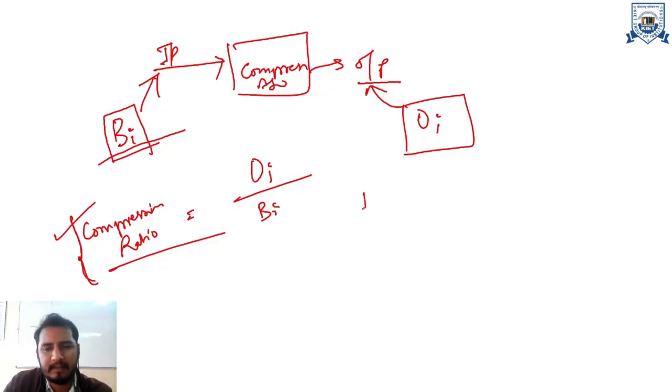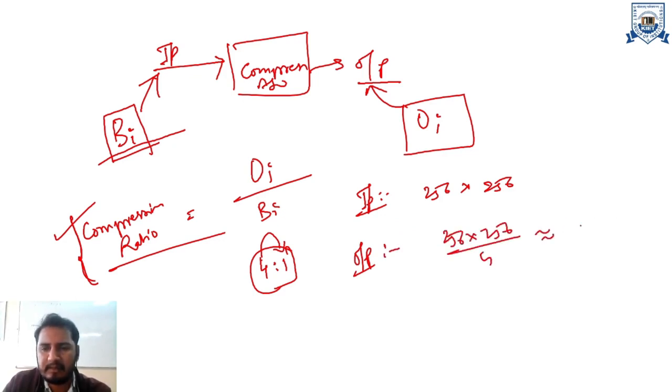For example, let us suppose that you are given an input image. The image is of dimension 256 cross 256. Now, you are going to use the algorithm which will compress it in the ratio of 4 to 1. So, these 4 pixels will be mapped to a single pixel. For the output, your output image will contain 256 cross 256 by 4 which will be equal to approximately 16,000 something.